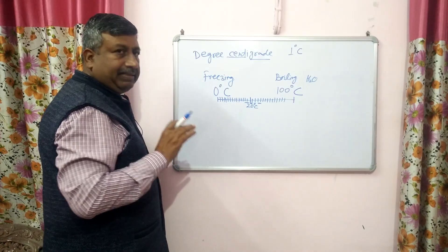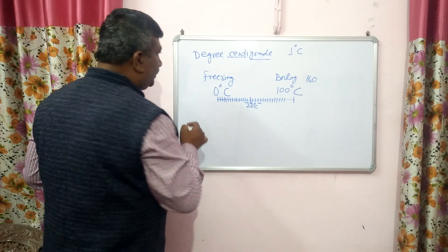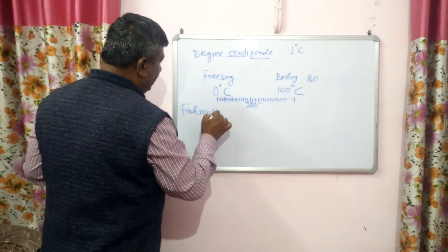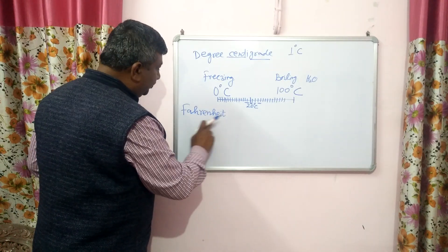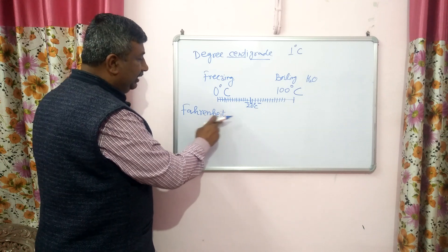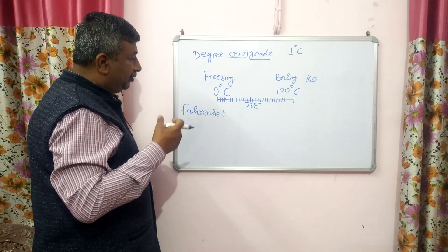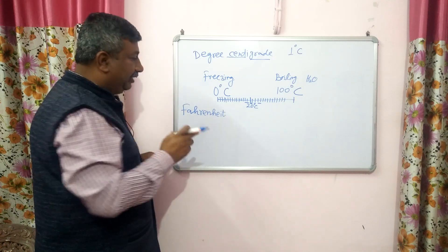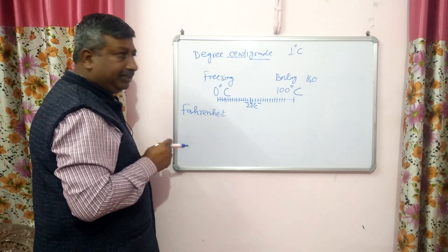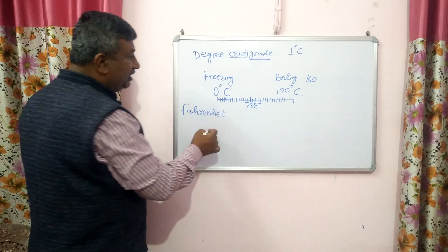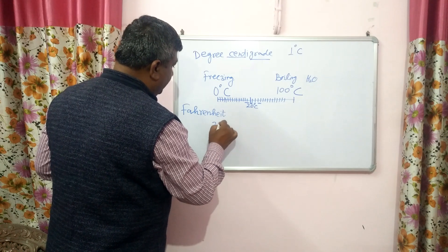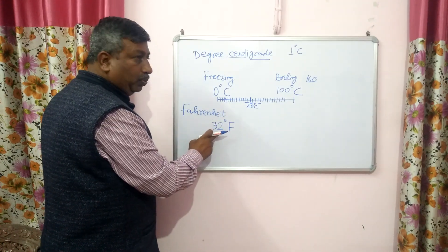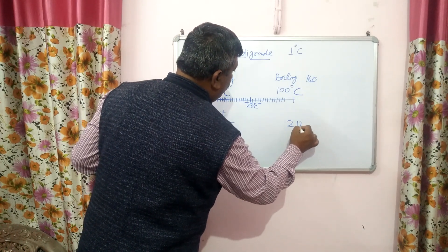Freezing is considered 0 and boiling is considered 100 on the centigrade scale. Another unit for temperature measurement is Fahrenheit — spelled F-A-H-R-E-N-H-E-I-T. The spelling is slightly tricky. Gabriel Fahrenheit was the scientist who developed this scale. He considered the freezing point of water as 32 degree Fahrenheit and the boiling point as 212 degree Fahrenheit.